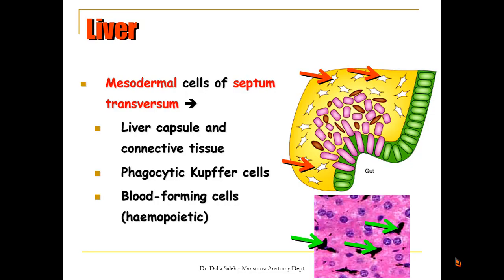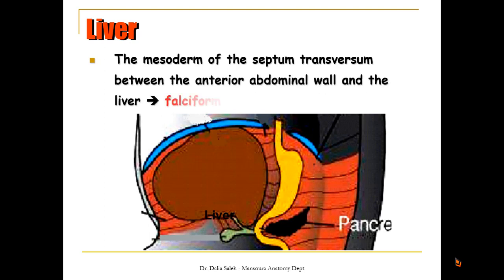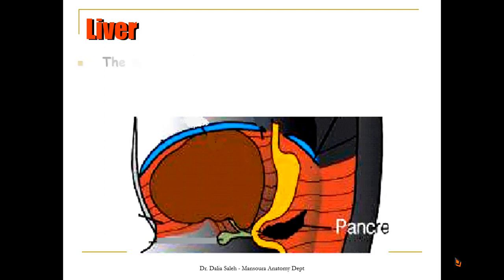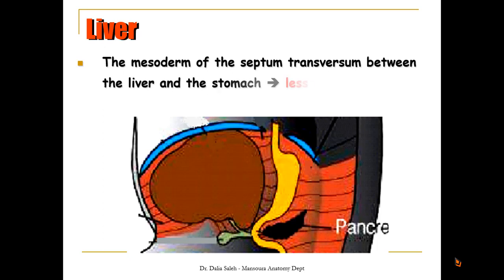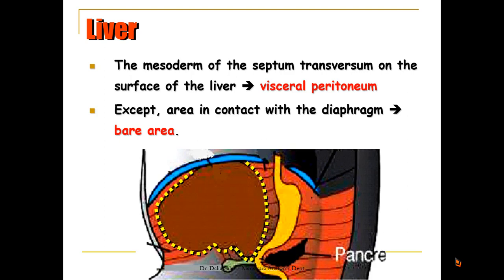The mesodermal cells also give rise to the blood-forming cells, or the hemopoietic cells. The mesodermal cells of the septum transversum between the liver and the anterior abdominal wall will form the falciform ligament, while the mesoderm between the liver and the stomach will form the lesser omentum. The part of the mesoderm on the surface of the liver will form the visceral peritoneum, covering it completely except at the area where the liver contacts the diaphragm — we call it the bare area of the liver.